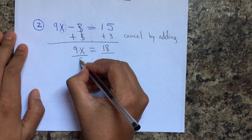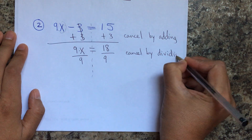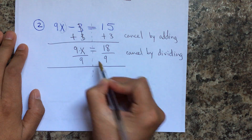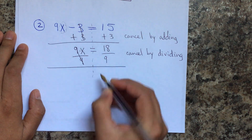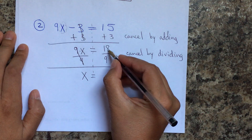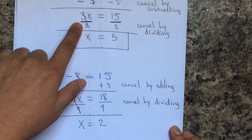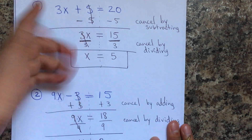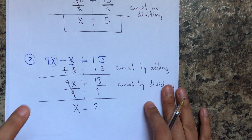Since 9x means multiplication, the opposite is to cancel by dividing. We draw a line and divide both sides by 9. Notice we don't put an equal sign when canceling. 9 divided by 9 is 1, but we don't write the coefficient 1 — it's omitted. 18 divided by 9 is 2. Also remember: in division we keep the same sign, unlike addition and subtraction where the operation changes.